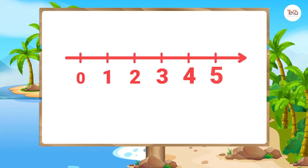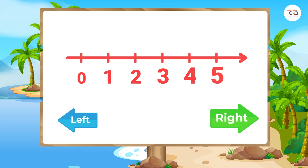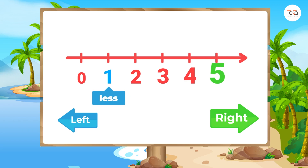And a number to the left is less than a number to the right. For example, number 1 is to the left of number 5, so 1 is less than 5.